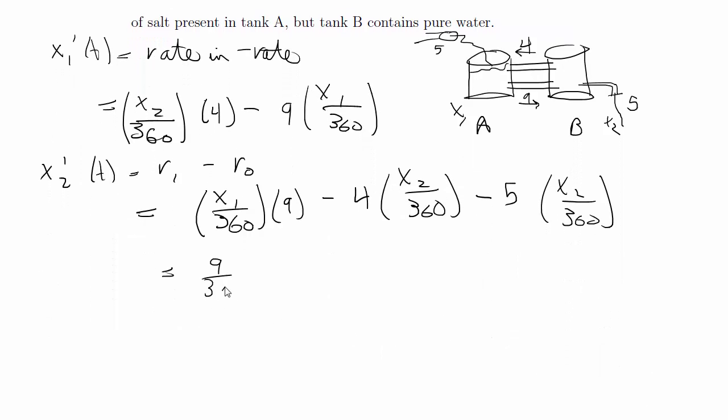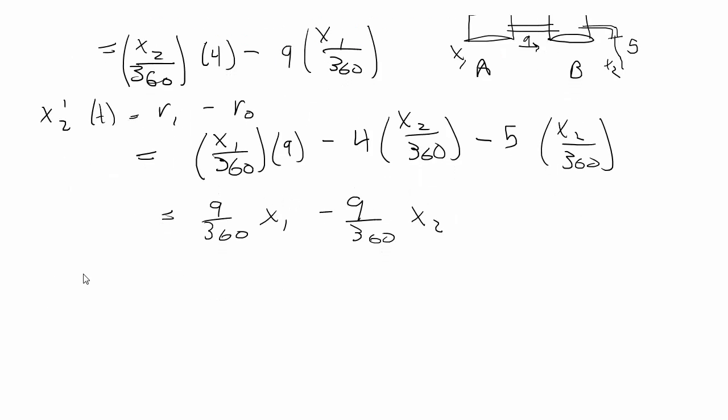So we can simplify this to be 9 over 360 times x1 minus 9 over 360 times x2. And now we're ready to solve and find the eigenvalues and eigenvectors. So again, we're just going to write out the constant coefficient matrix,